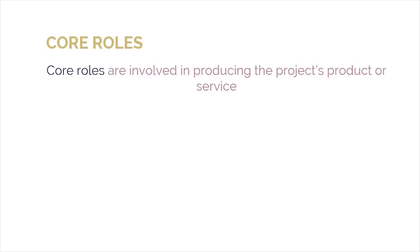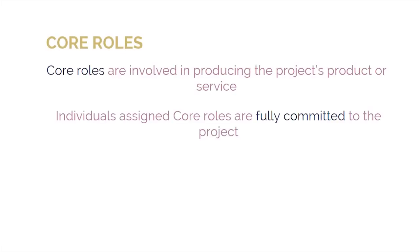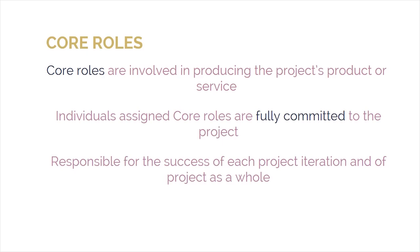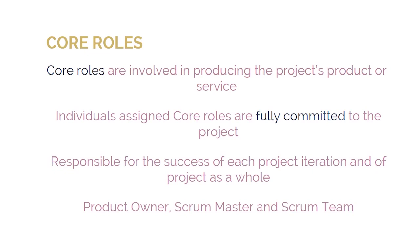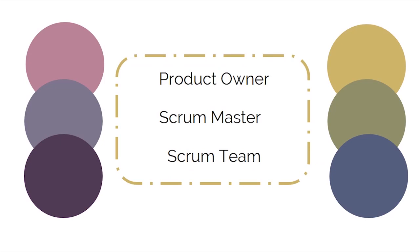Core roles are those that are involved in producing the project's product or service. Individuals who are assigned core roles are fully committed to the project. They are ultimately responsible for the success of each project iteration and of the project as a whole. Core roles are assigned to the product owner, Scrum master, and the Scrum team. Let's meet them one by one and see what they do in a Scrum-controlled project.